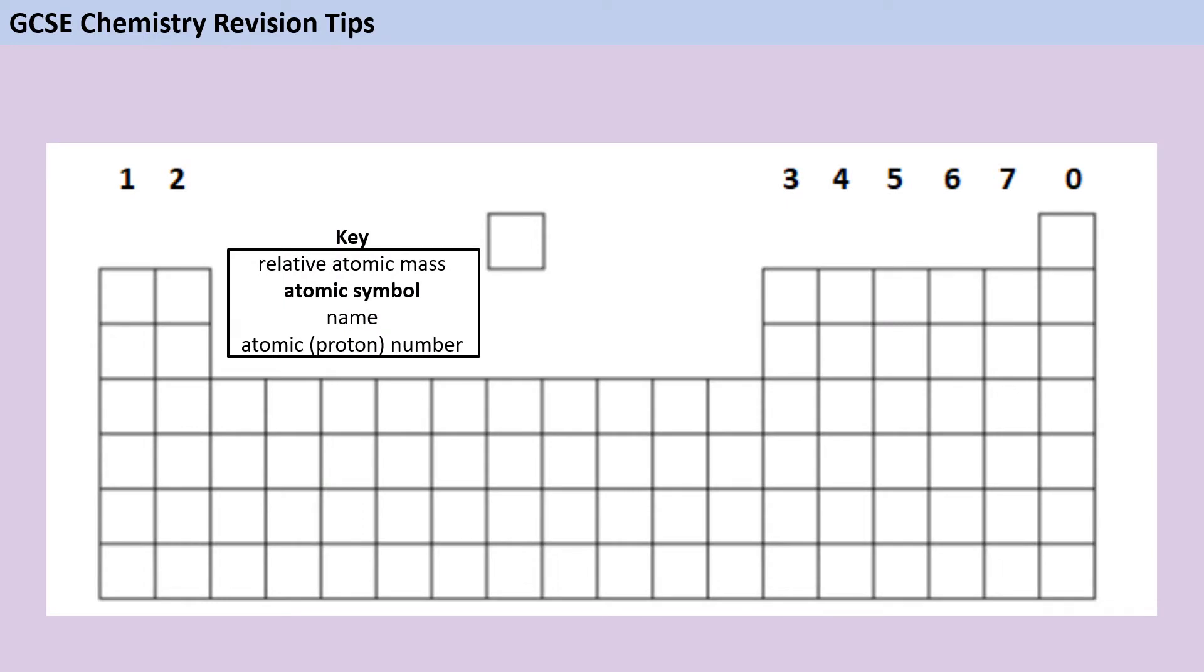For paper two, you're less likely to want to make lots of annotations on your periodic table. But don't forget, even though we often think of topics one to five as being paper one topics, the specification does say that atomic structure and bonding and basic quantitative chemistry can be examined on either paper. So it's still worth you making a couple of little notes to yourself. Things like where the metals and nonmetals are. A reminder that the key does tell you that atomic number is the proton number, and that in an atom, the number of protons and electrons is the same as each other.